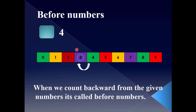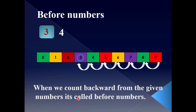See here — before numbers are always smaller than the given numbers. 8 is smaller than 9. 7 is smaller than 8. 6 is smaller than 7. 5 is smaller than 6. 4 is smaller than 5. 3 is smaller than 4. 2 is smaller than 3. 1 is smaller than 2.